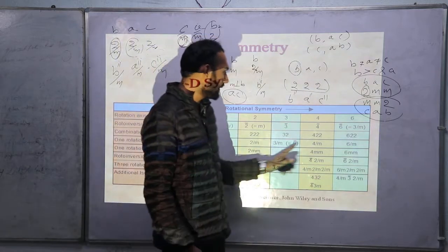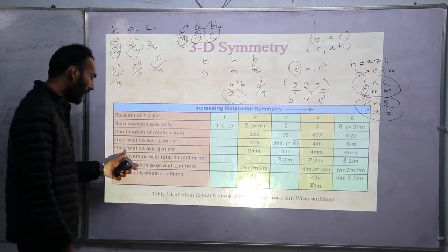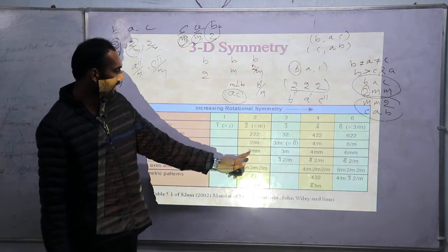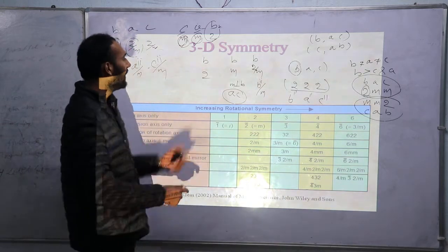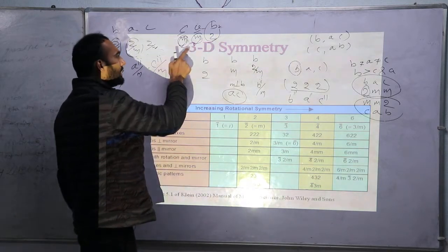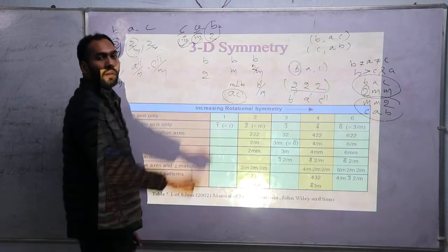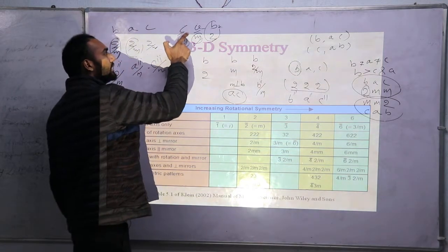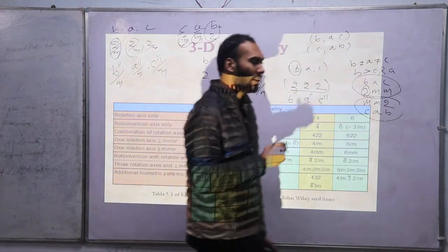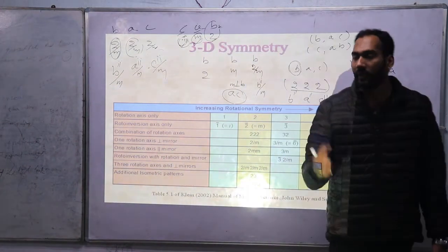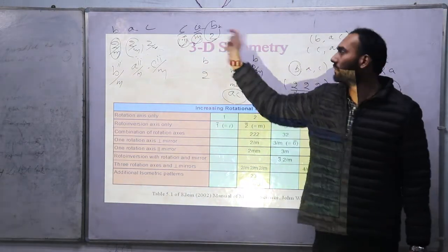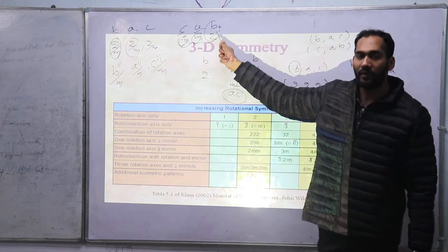Then one rotation axis with a perpendicular mirror: 2/M, 3/M, 4/M, 6/M. Then one rotation axis with a parallel mirror — for example, 2mm means the two M's are parallel to B. In the notation mm2, this M is parallel to B and this M is parallel to B, but this M is perpendicular to C. The symmetry element is written in the position corresponding to a particular axis: C, A, or B.